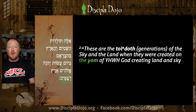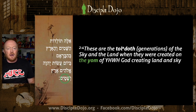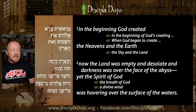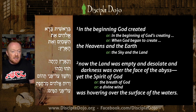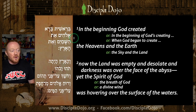Capping it all off — whether this is the end of the first creation account or the beginning of the second — I think it serves double duty and is therefore a perfect hinge. These are the generations of the sky and the heavens and the earth. We've just seen how Genesis 1:1 began: 'In the beginning God created the heavens and the earth.' So this is a bookend — 2:4 is an inclusio with 1:1.